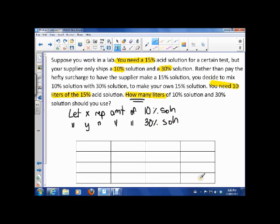So what I've got going is a little chart. And this chart is going to let us organize our ideas just like we talked about in class. So let's call this part the 10% solution. Let's call this part the 30% solution. And now that leaves our total. Now instead of total, we can actually say we're talking about a 15% solution.